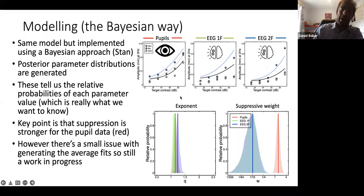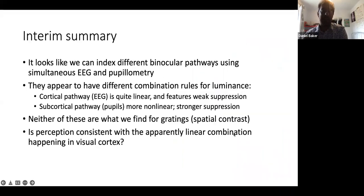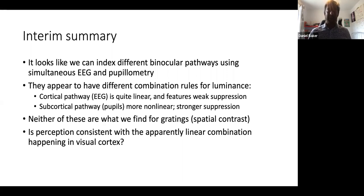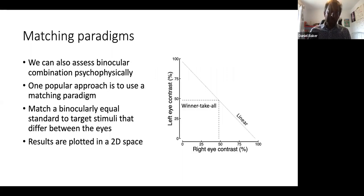The main takeaway is that we get very different responses from different binocular pathways probed using simultaneous EEG and pupillometry. The EEG responses, indexing the canonical cortical pathway, seem to be quite linear and feature very weak interocular suppression, whereas the subcortical pathway probed by the pupils is much more nonlinear and involves stronger interocular suppression. Both findings are very different from what we see for spatial contrasts with gratings.